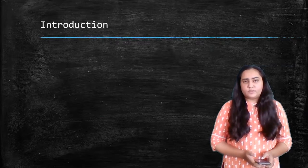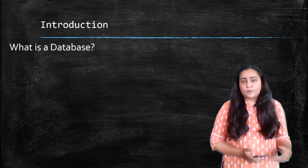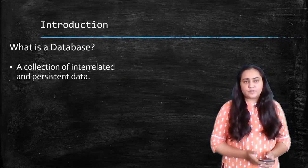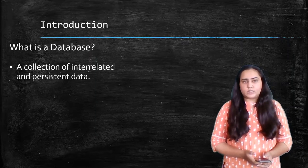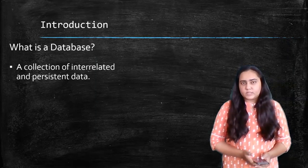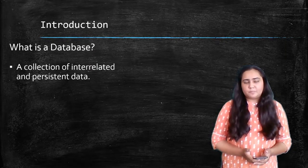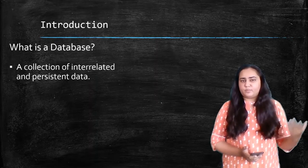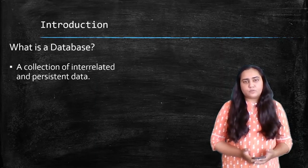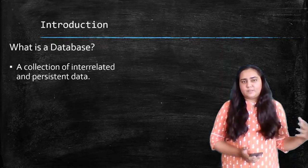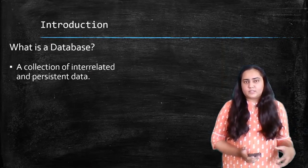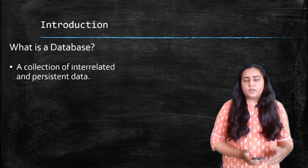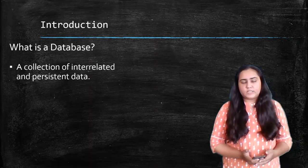First I would like to begin with the definition of DBMS, and for that we need to first define what a database is. A database is a collection of interrelated and persistent data. A database consists of a number of tables with columns and rows, and these tables are actually related with each other — that is what makes a database, and that's why the word interrelated has been used.